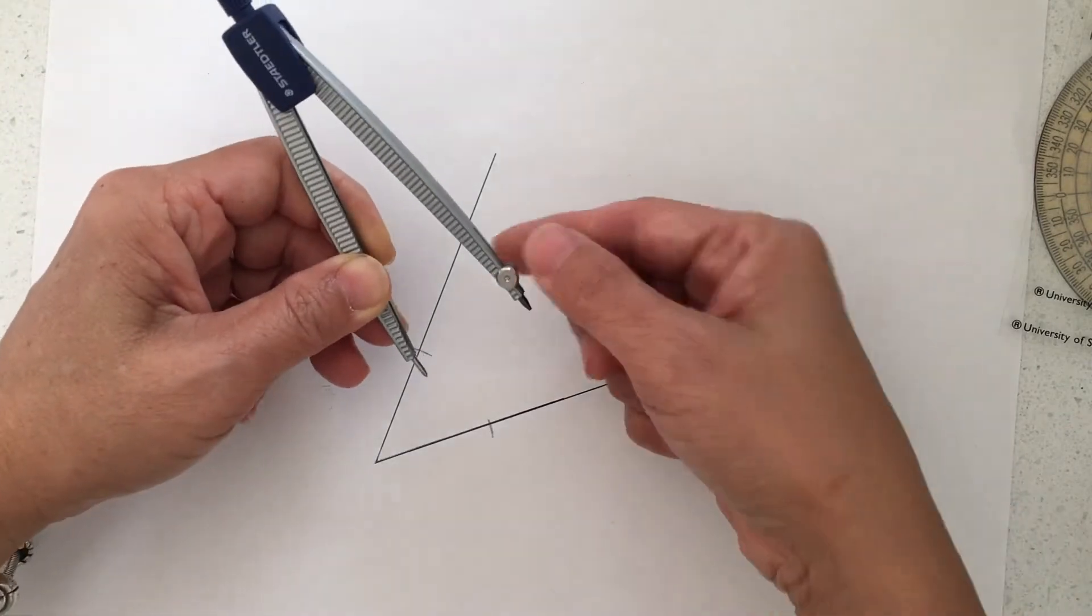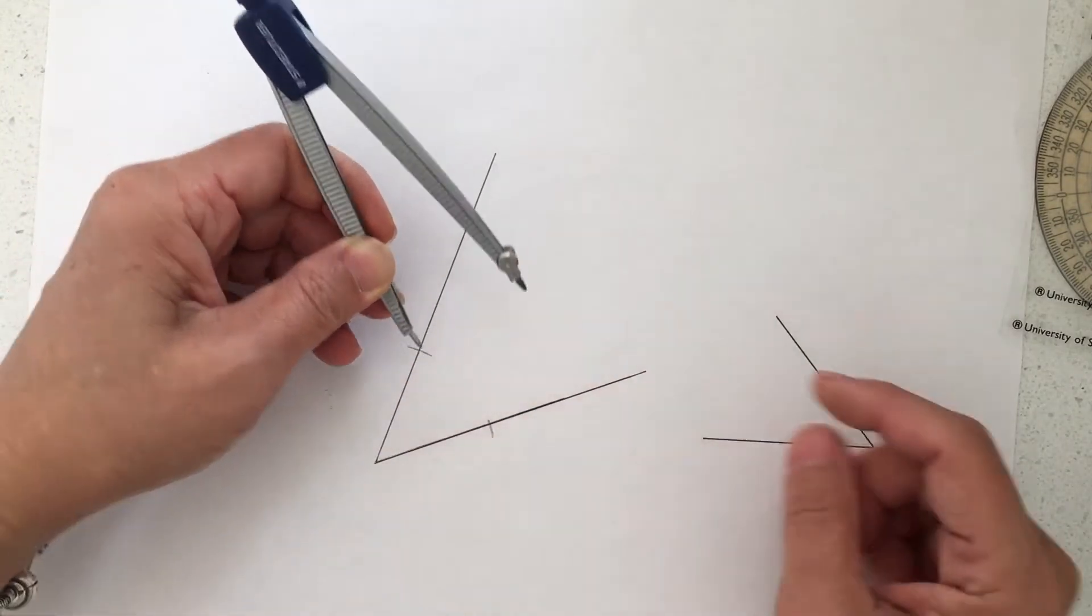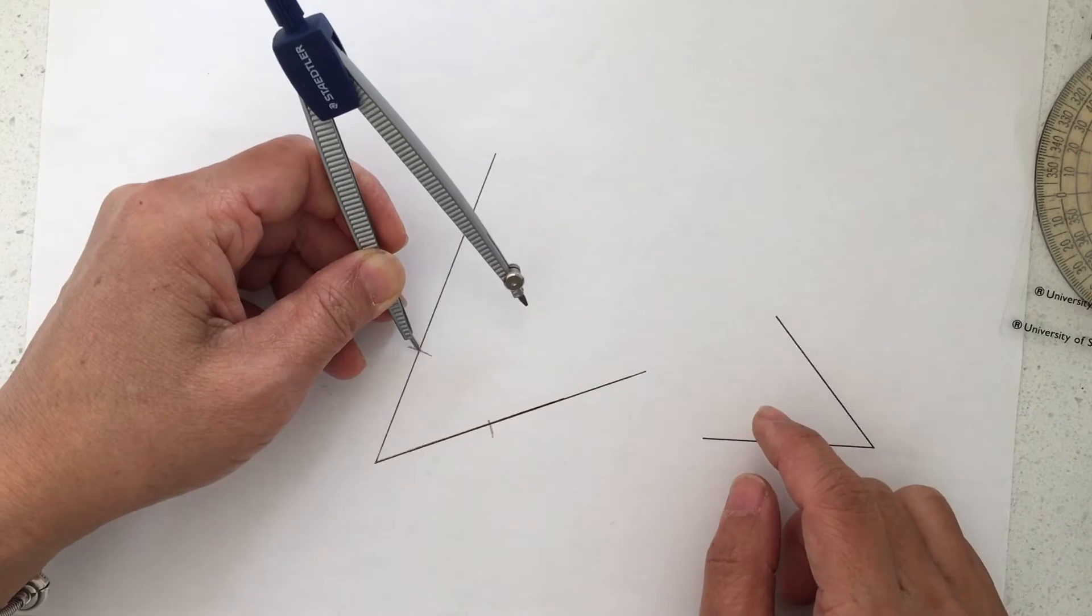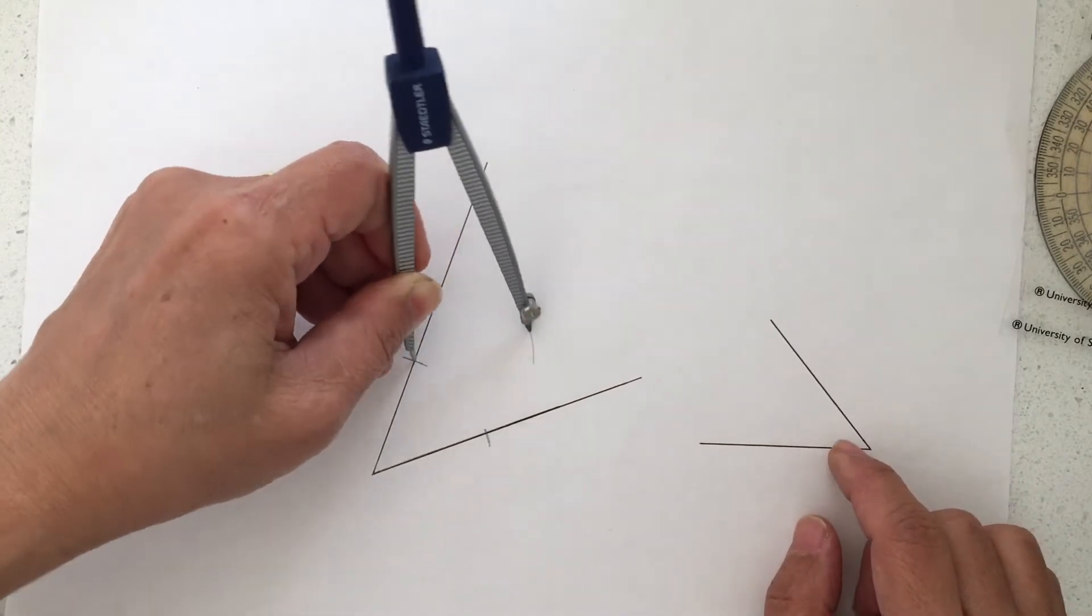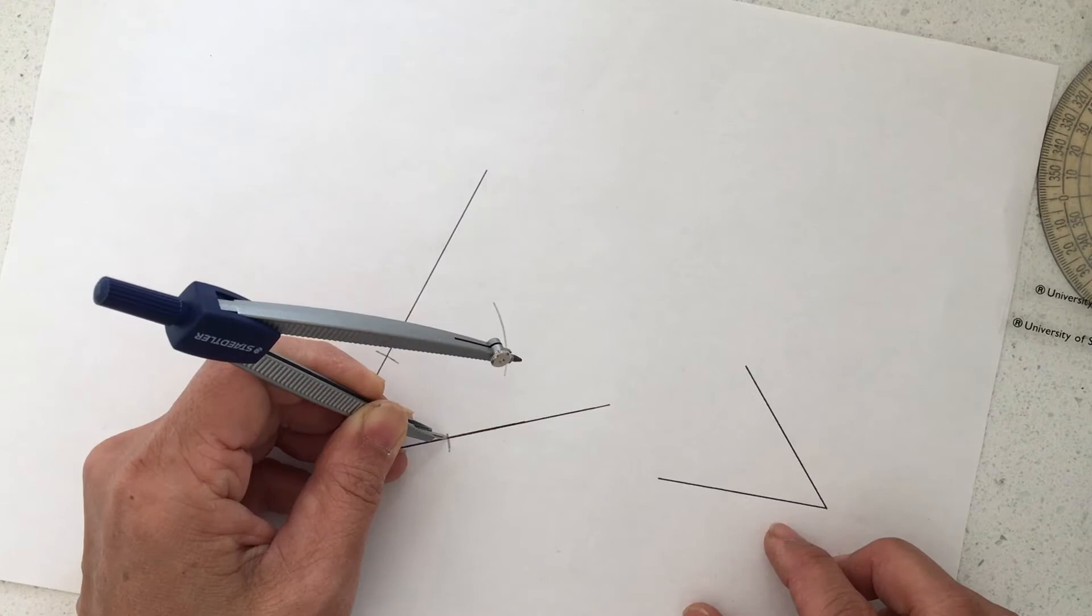You can change the pin, the distance, or you can leave it as it is. But this time, you mark it in the corner.